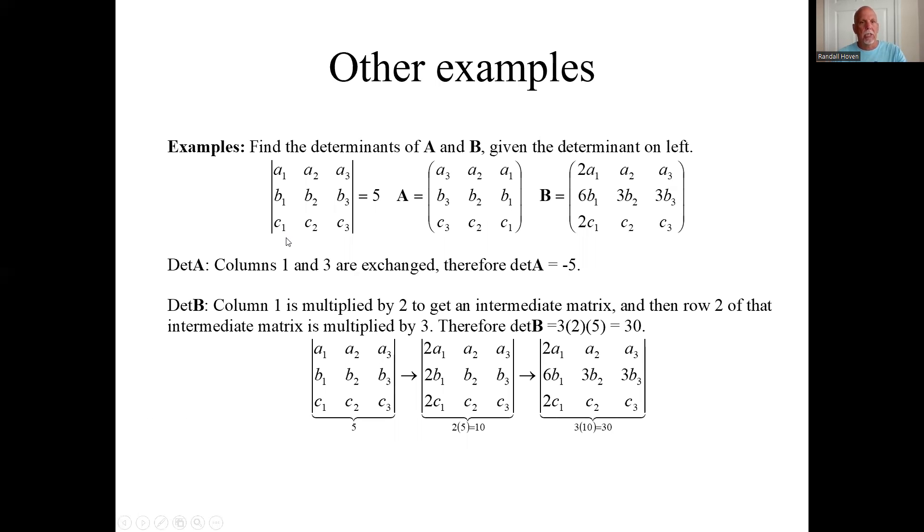Let's do some other examples. Let's say somebody gave us this matrix and they told us the determinant is number five. They say, okay, find the determinant of this. Let's look here. This matrix versus that matrix. What we did was switch rows or columns one and three. Three on the left and one on the right. We just switched columns. That is a sign change. So the answer would be minus five.